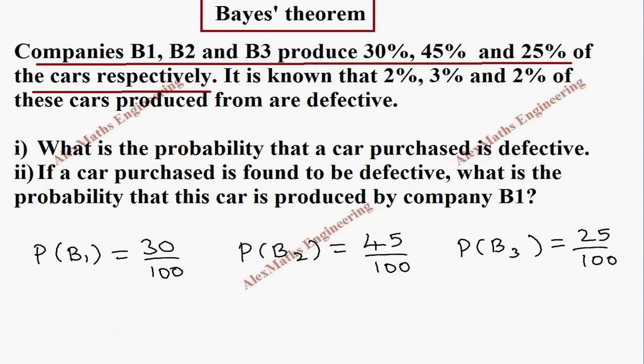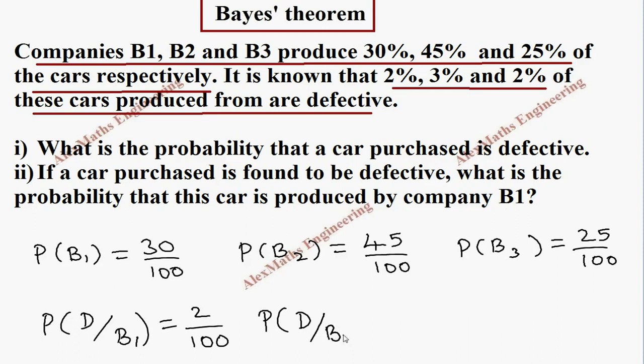And they have also given 2 percentage, 3 percentage and 2 percentage of these cars produced are defective. So we know B1 defective is 2 by 100. In the same way, P of defective from company B2 is 3 by 100, and P of defective from company B3 is 2 by 100.